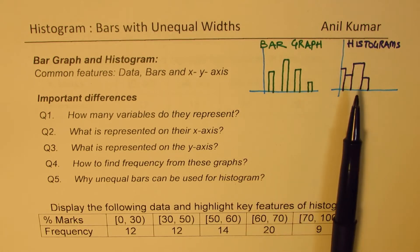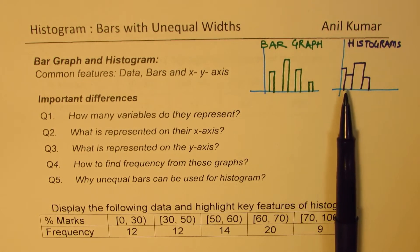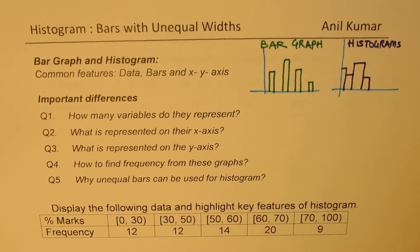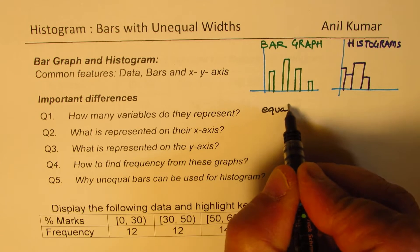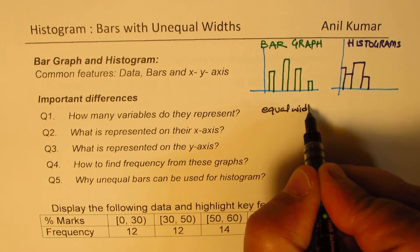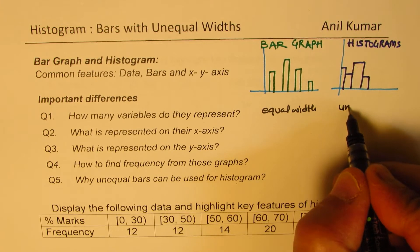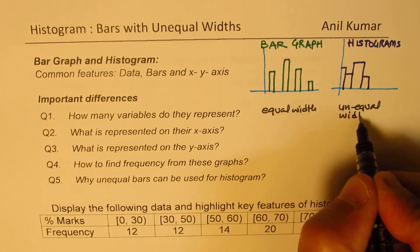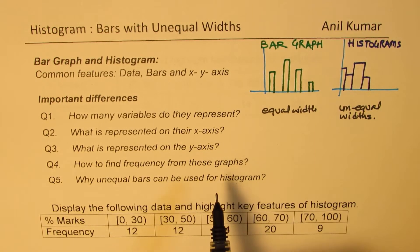You will notice that when I was drawing the histograms I didn't really bother to make their widths the same. Now that is a very important parameter. So here we have equal widths in bar graphs, but in the case of histograms we can have unequal widths. My question here is: why is that so?